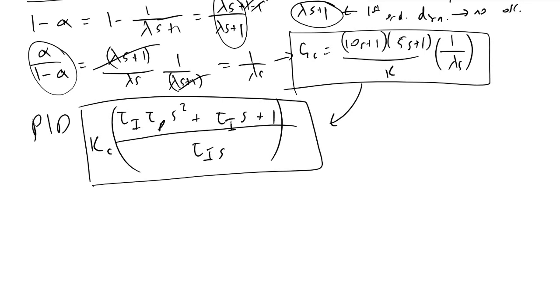And so to do that, we will expand our numerator in this term. So what we'll find is that gc is equal to 50s squared plus 15s plus 1 divided by k times lambda s.